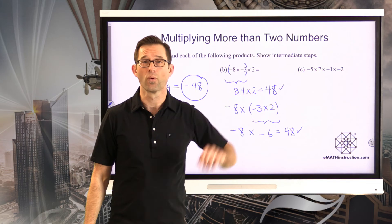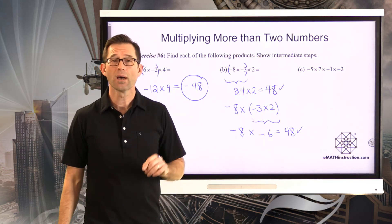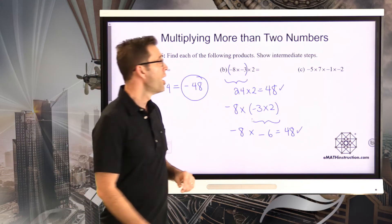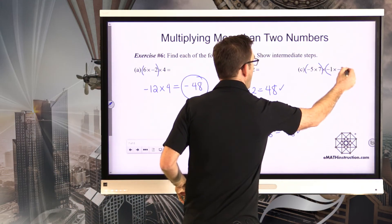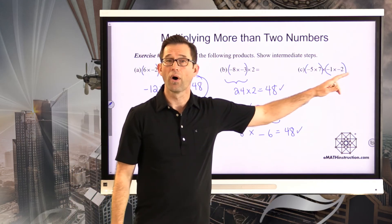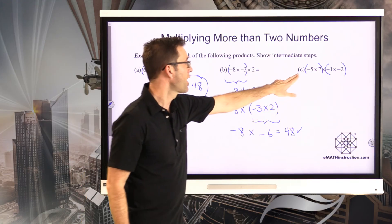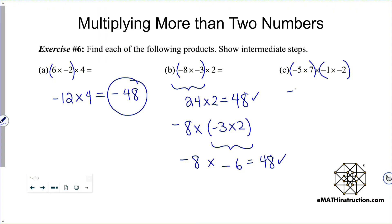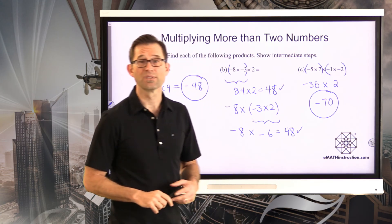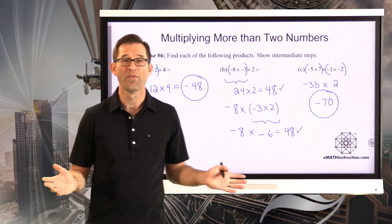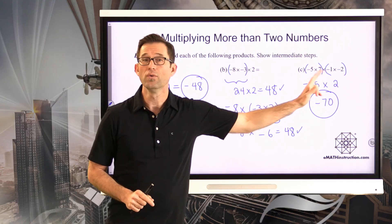For letter C with four numbers, I like to group the first two together and the last two together. Negative 5 times positive 7 — a negative times a positive gives negative 35. Negative 1 times negative 2 — a negative times a negative gives positive 2. Now I have negative 35 times positive 2 — a negative times a positive gives negative 70. You'd get negative 70 no matter how you grouped these.